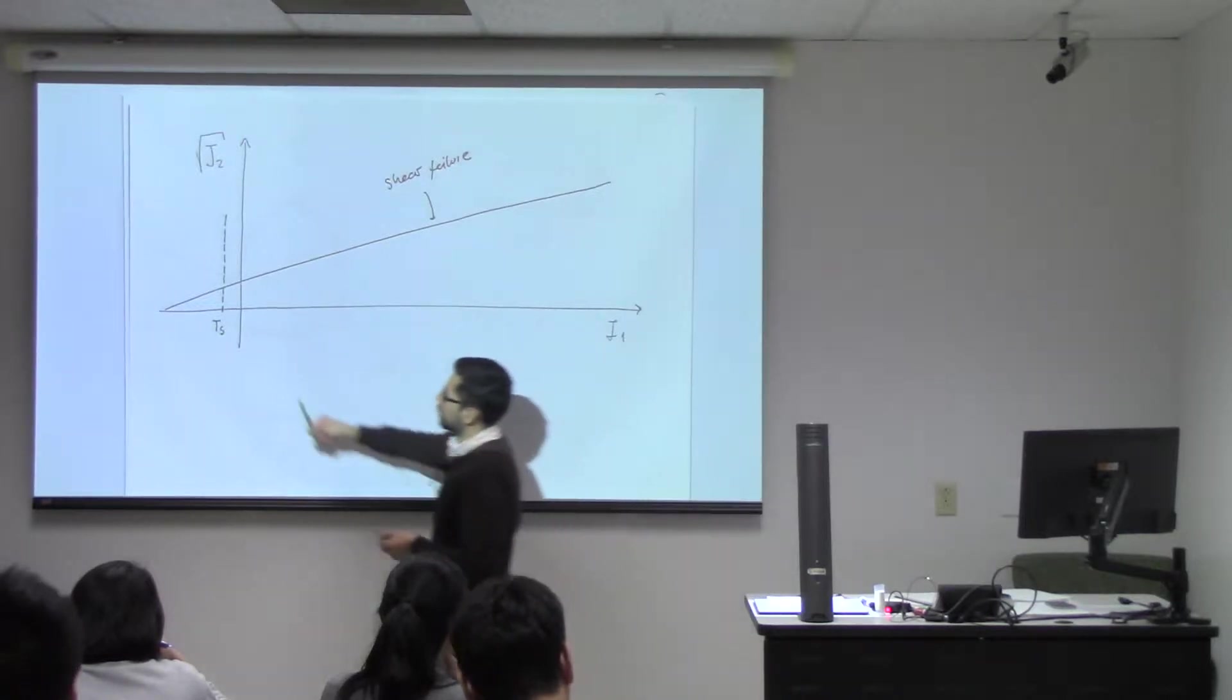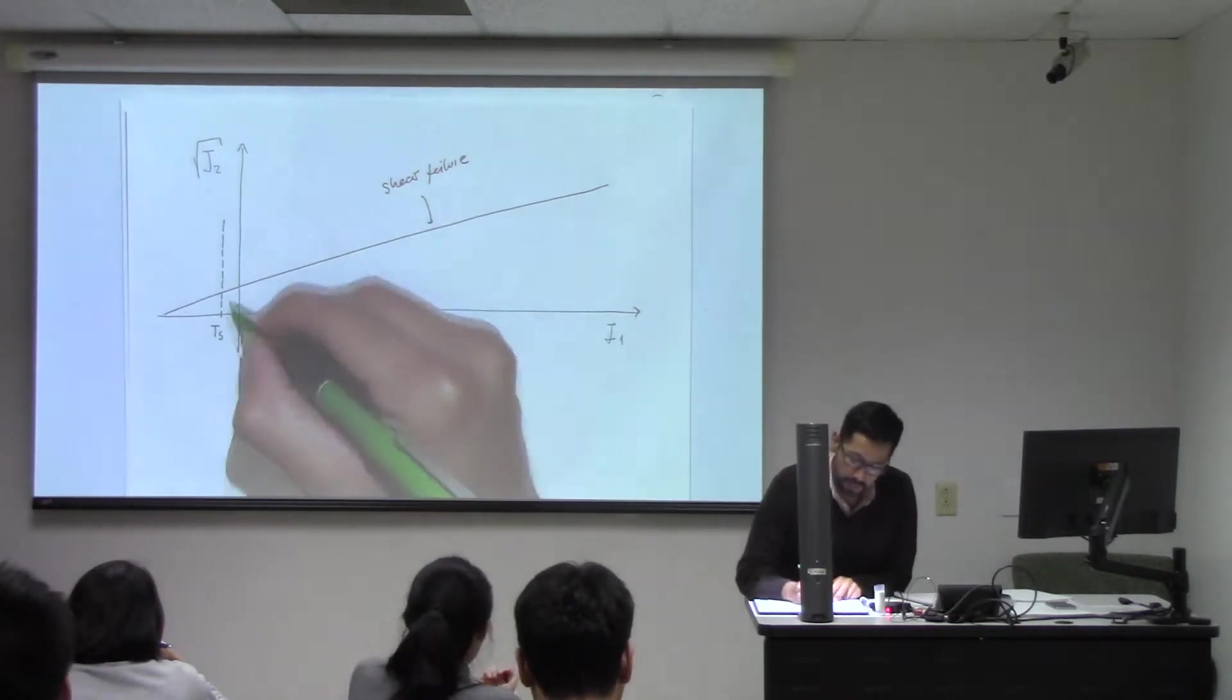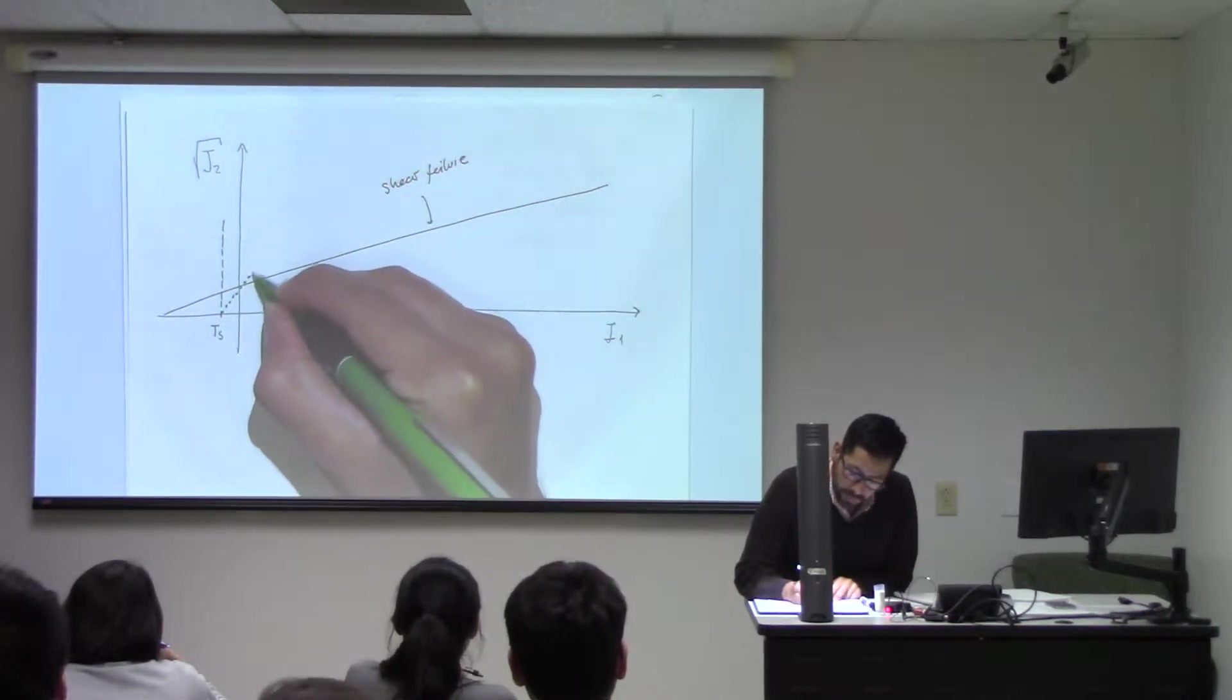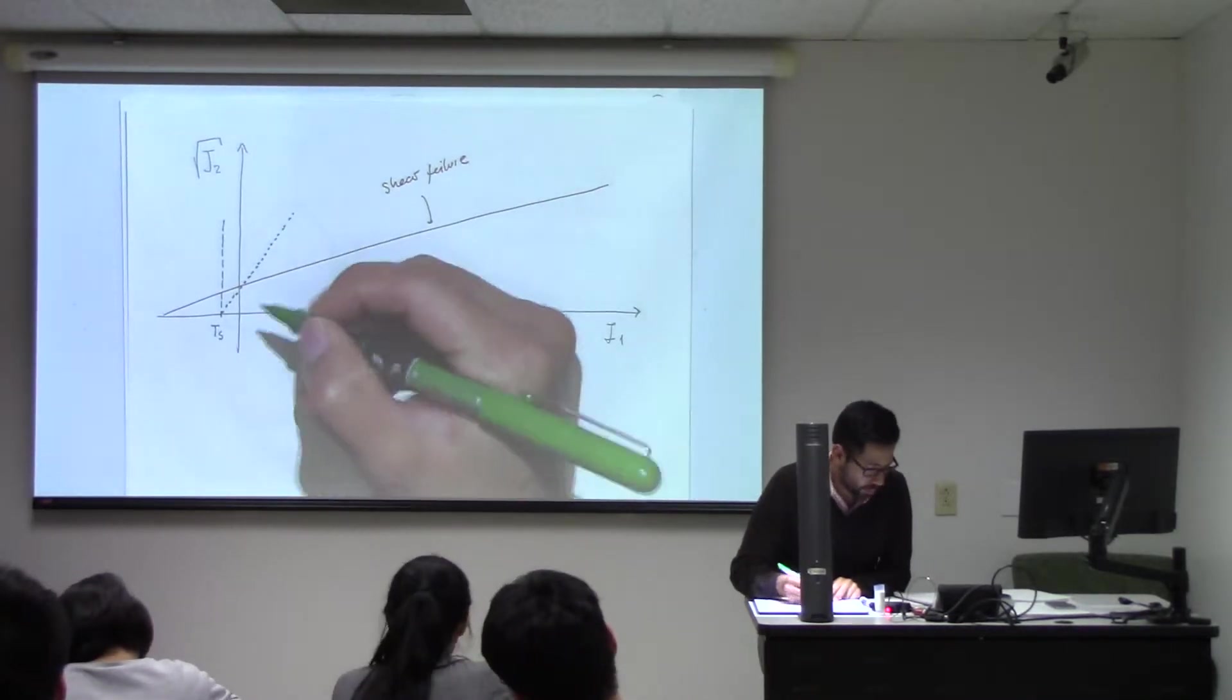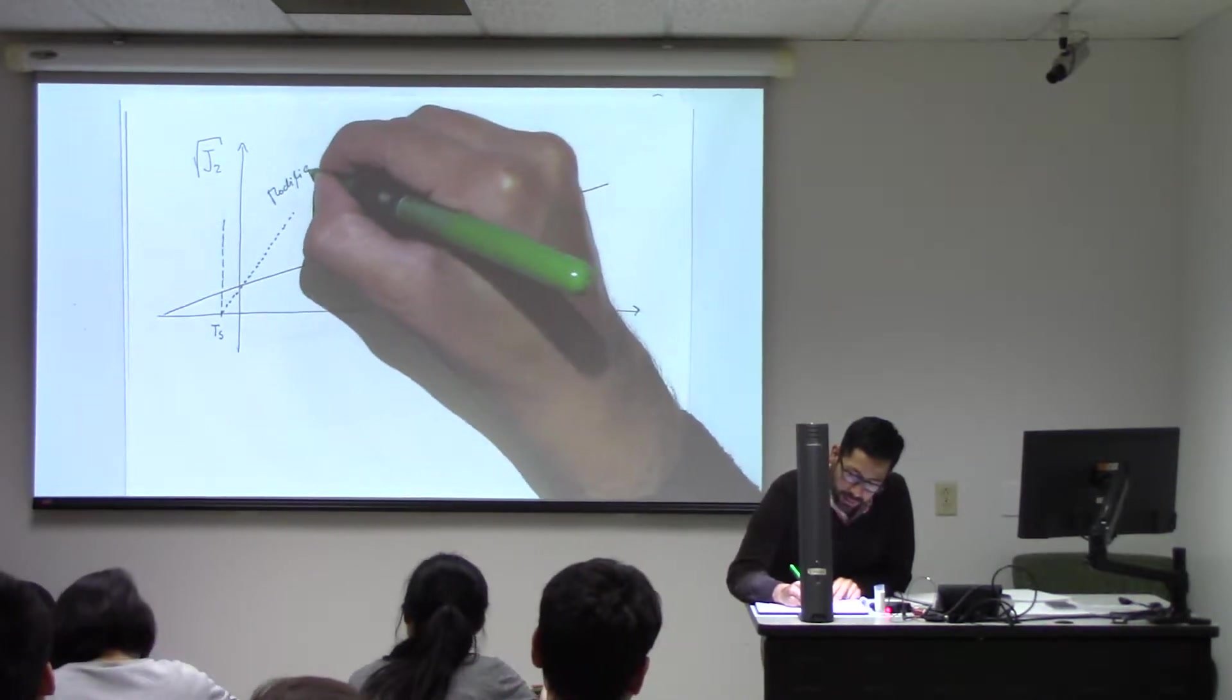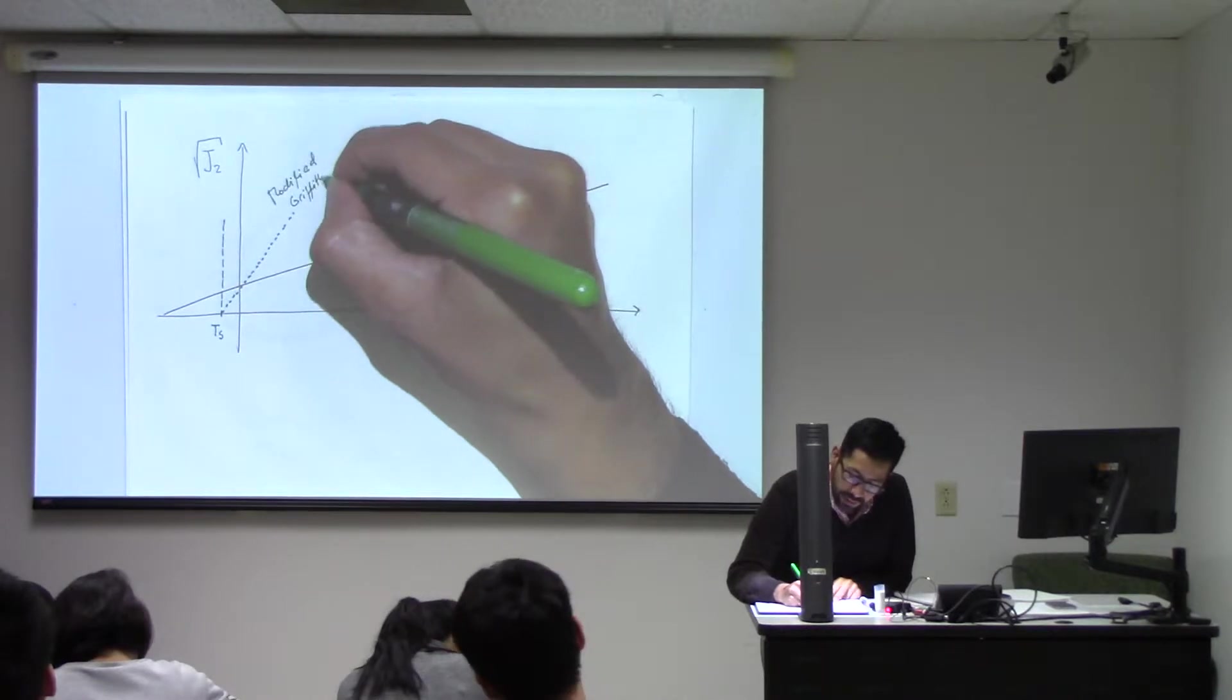The tensile strength line is not just a straight line but an inclined line. Let me draw here the points which is called the modified Griffith criterion.